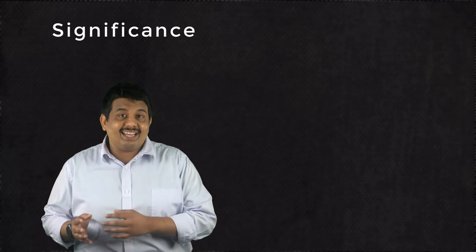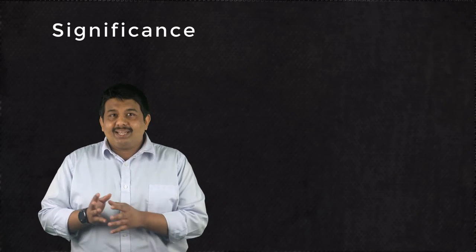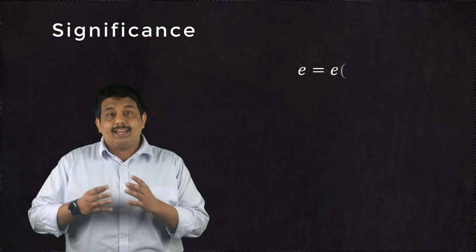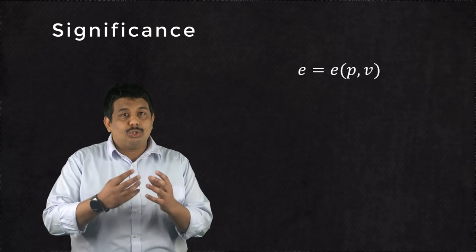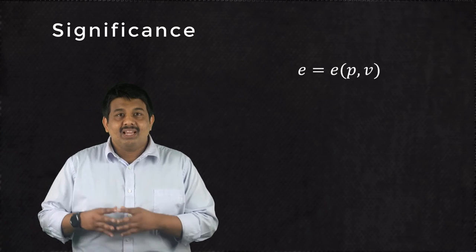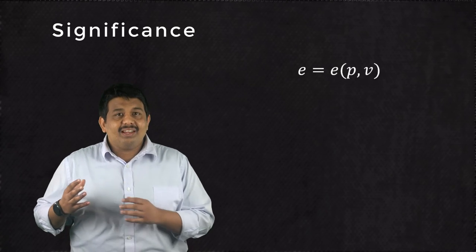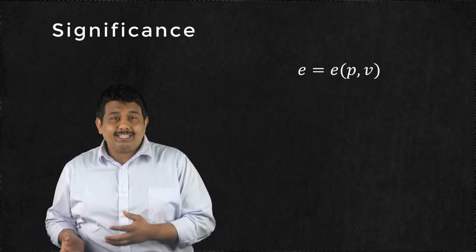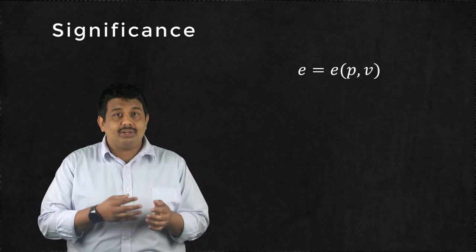Before wrapping up this lesson, let us try to understand the importance of the Rankine Hugoniot equation. For a thermodynamic system under equilibrium, any state variable can be expressed in terms of any other two state variables. For example, the internal energy E can be expressed as a function of pressure and volume.